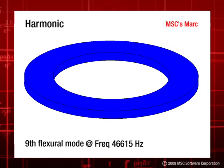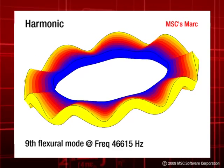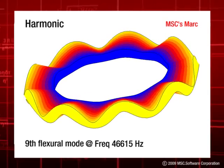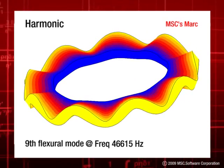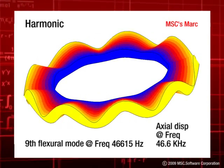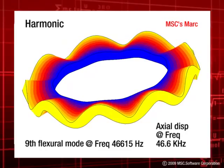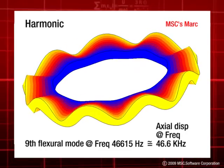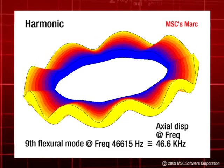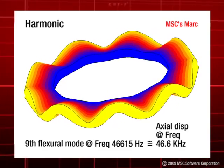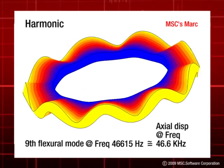The frequency range is chosen around the desired frequency of the ninth flexural mode as computed in the previous analysis. The axial displacement plot here is at a frequency of 46.6 kHz, which is close to the resonant frequency, and the amplitude of displacement in the axial direction is more or less uniform in the circumferential direction.